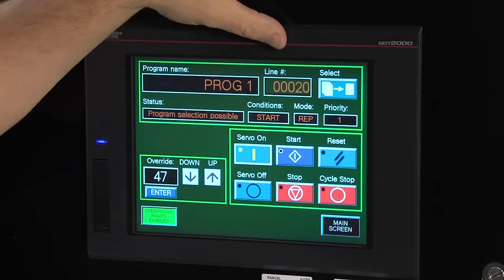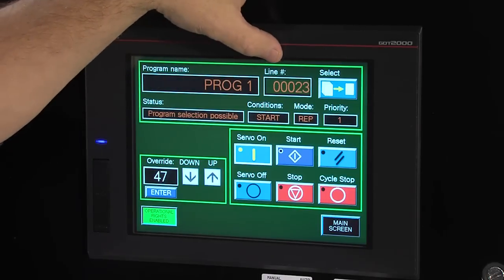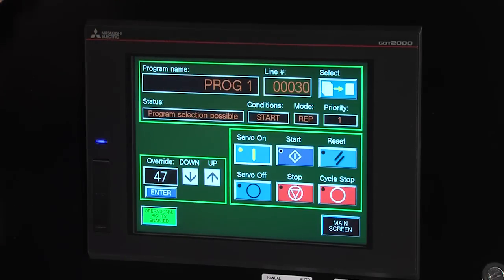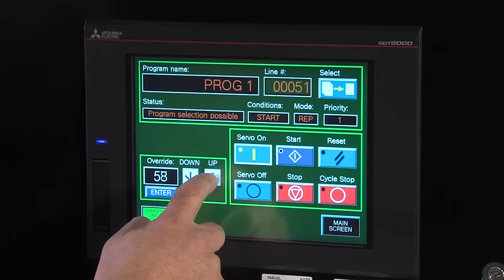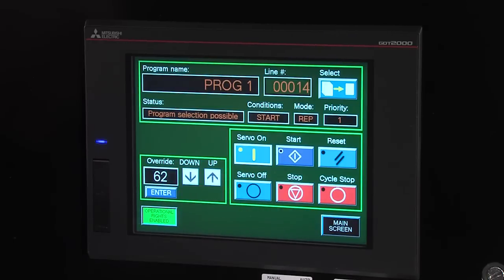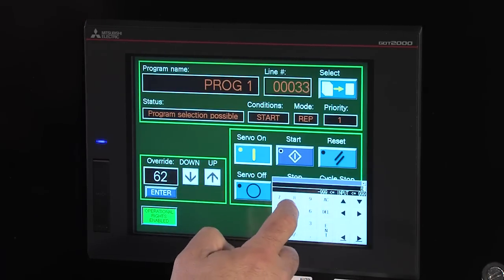You can see that the program is running through the line numbers. It's showing you which line number we are on in the actual robot program code. We can change the speeds here by adjusting the speeds up and down. I can either use the arrow keys to adjust the speed up and down, or I can key in a new speed.